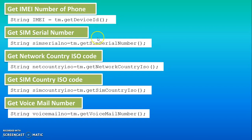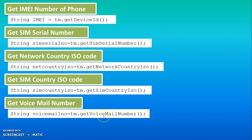For getting the SIM serial number, use the method getSimSerialNumber(). For country ISO, use getNetworkCountryIso(). For getting the SIM country ISO code, use getSimCountryIso(). For getting the voicemail number, use getVoiceMailNumber(). All these variables are string type because these methods return values in the form of a string.